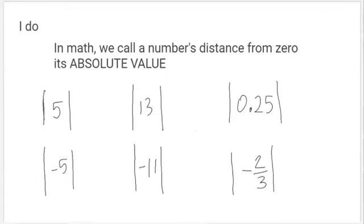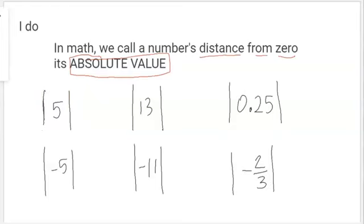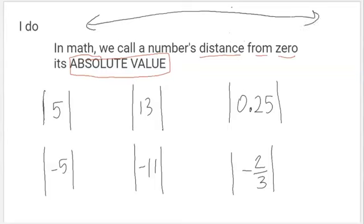So that's a big idea. In math, we call a number's distance from zero its absolute value. When we're asking for a number's absolute value, we put these bars around it — two lines that are bigger than the number. You have to be careful to make sure they're big; if you make those bars too small, it can look like ones and might look like the number 151. So always make those bars bigger than the number. The absolute value of five is the number five's distance from zero on a number line — its absolute value is five, a positive number.